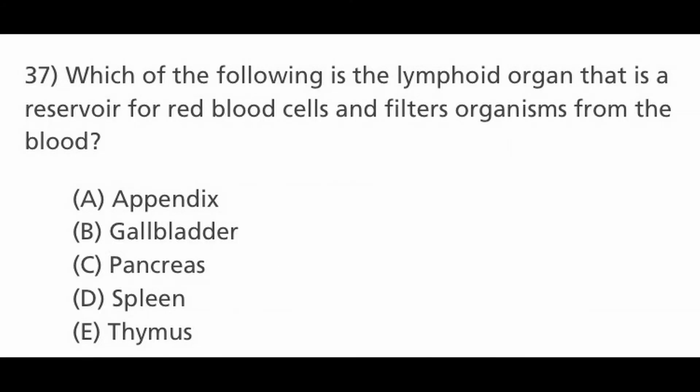Next question: which of the following is the lymphoid organ that is a reservoir for red blood cells and filters organisms from the blood? Options are A. Appendix, B. Gallbladder, C. Pancreas, D. Spleen, and E. Thymus. The answer is D, spleen, which is the lymphoid organ that is a reservoir for RBCs and filters organisms from the blood.